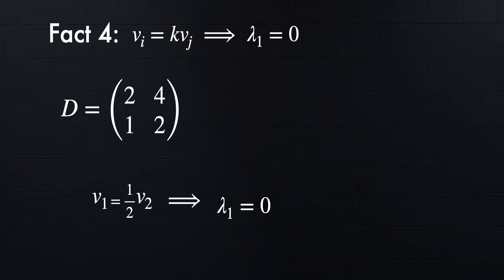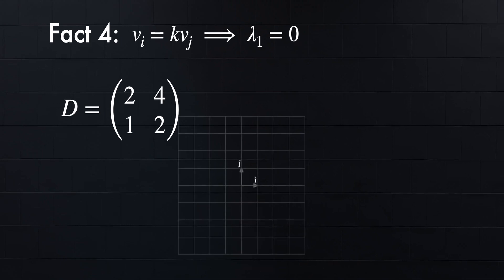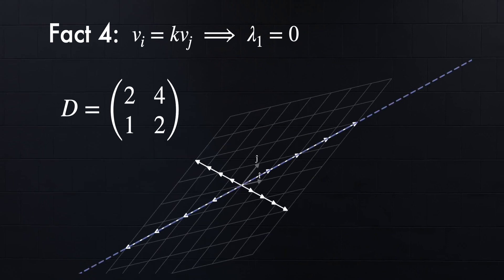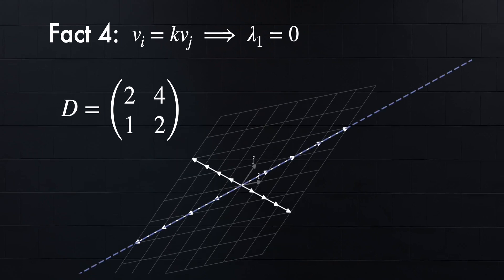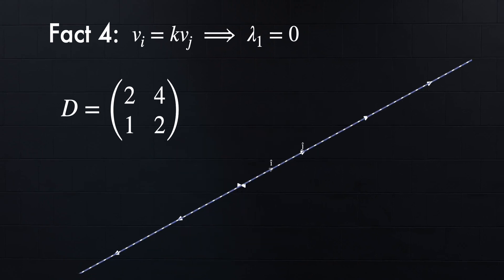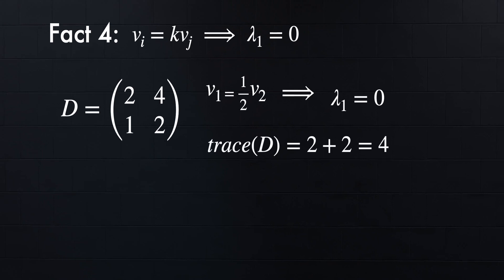And to picture this, we can think of the columns of a matrix telling us where the basic axes of a plane end up. If multiple columns are the same vector but scaled, that means two of our axes will end up at the same spot, meaning we're squishing down one dimension. And if we're squishing down a dimension, that means some eigenvector has been squished down to 0. And since we know that one of the eigenvalues is 0, we can quickly find the other one by using the trace method.